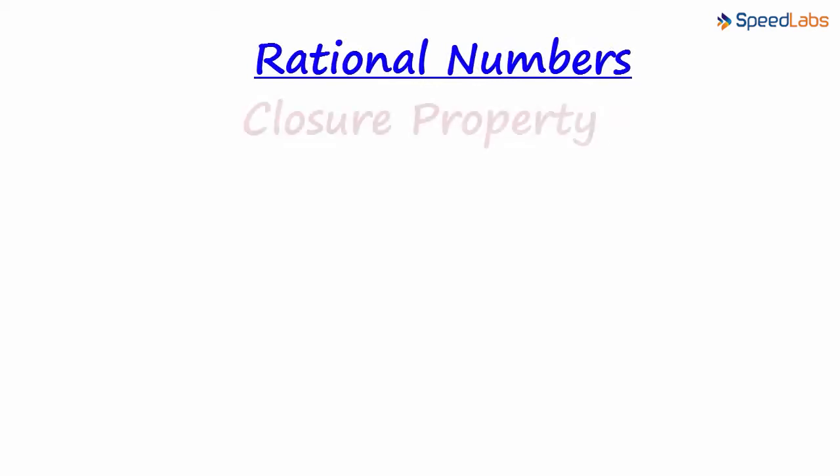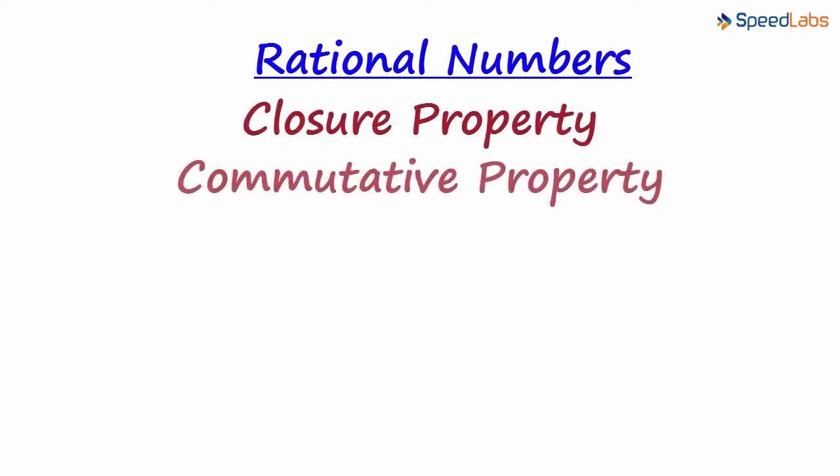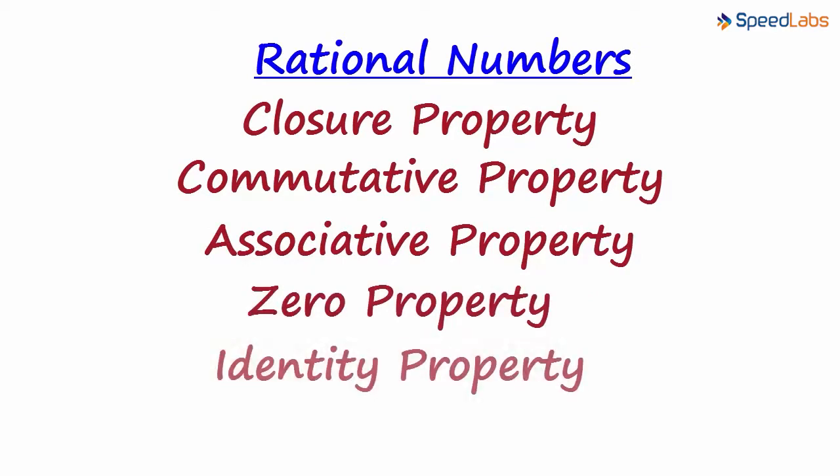In the previous videos we learnt a few properties of operations on rational numbers: the closure property, the commutative property, the associative property, zero and identity properties. There are a few more extremely simple properties we need to understand.